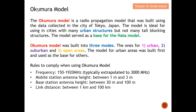The Okumura model is a radio propagation model built using data collected in the city of Tokyo, Japan. The model is ideal for use in cities with many urban structures but not many tall buildings — for example in Japan, where buildings are not very tall due to earthquake considerations. This model serves as a base for the Hata model, which I'll cover in my next video. I'd like to distinguish the difference between the Okumura model and the Okumura-Hata model.